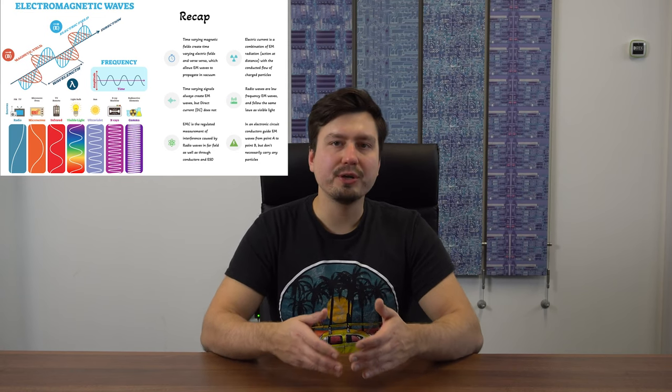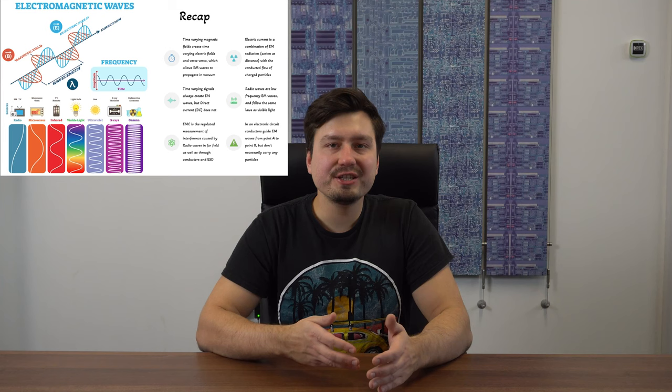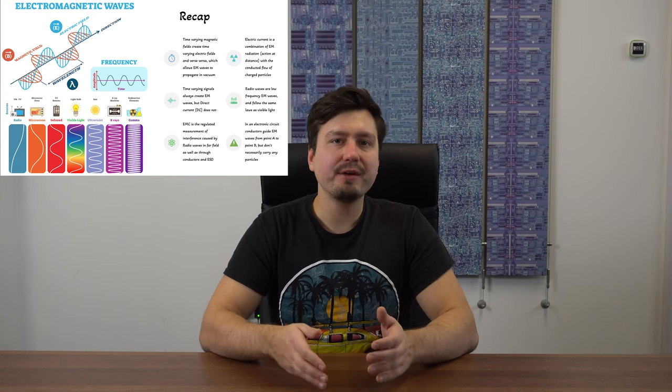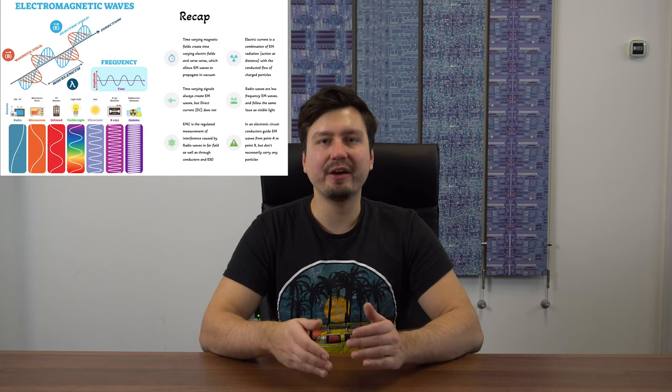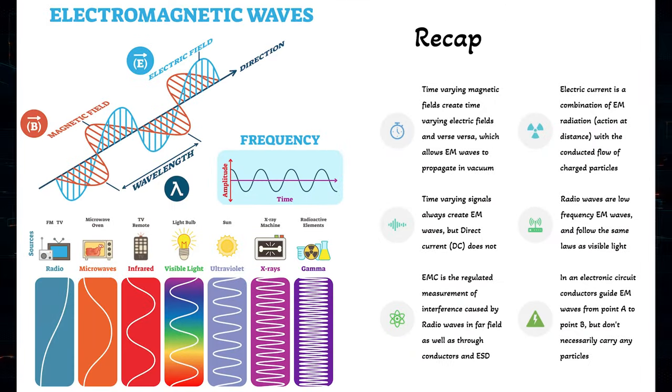So on a printed circuit board, conductors which are your traces are guiding the waves from point A to point B but don't necessarily carry any charged particles. Radio waves are in fact following the same physical laws as visible light, gamma rays, X-rays, and all this fancy stuff.